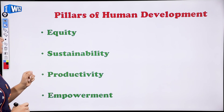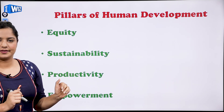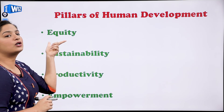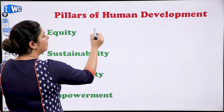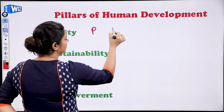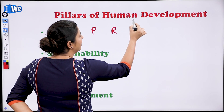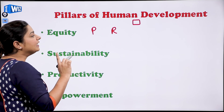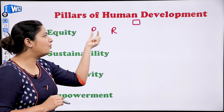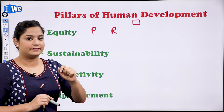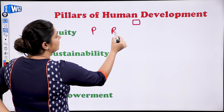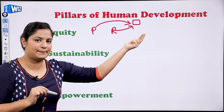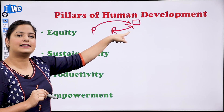Now, the pillars of human development — there are four pillars you need to remember. These can be asked in long-answer questions. The first one is equity. Equity means — suppose there are two people, one is poor and one is rich, and both need to go to the same school. If a country only gives preference to the rich and not to the poor, that is inequality — there is no equity. But if both rich and poor get equal opportunity in the school, same fees and everything, then that is equality.